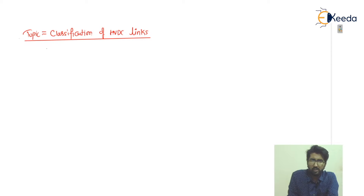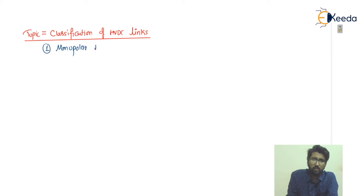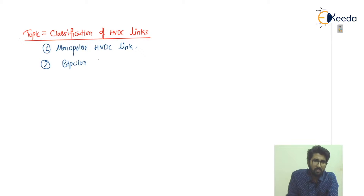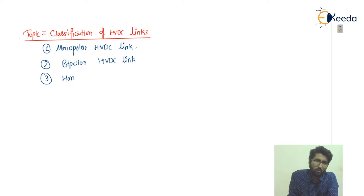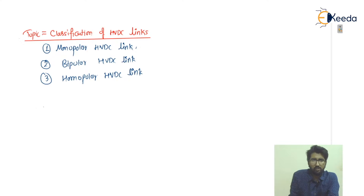So if I talk about the classification of HVDC links, there are three broad classifications: the first is the monopolar HVDC link, the second is the bipolar HVDC link, and the third is the homopolar HVDC link.